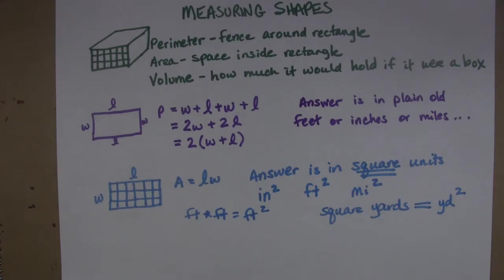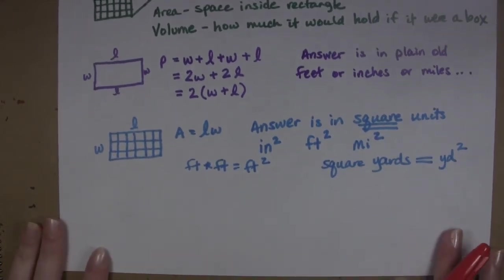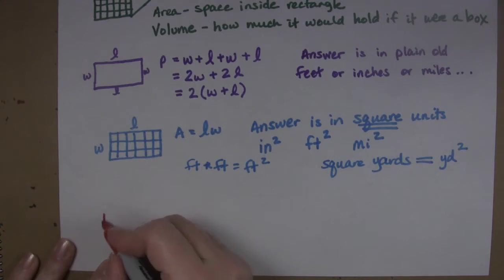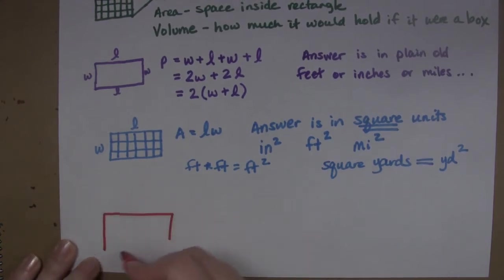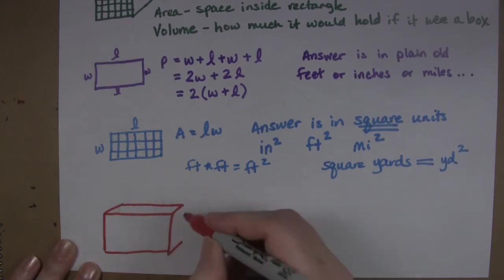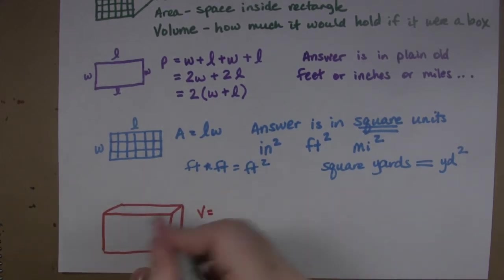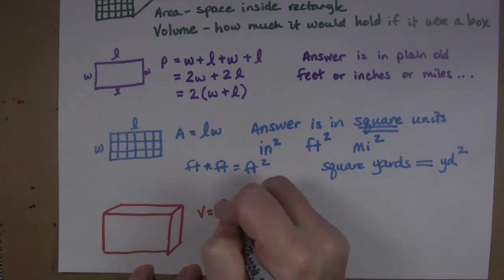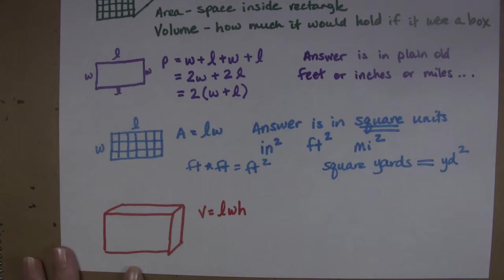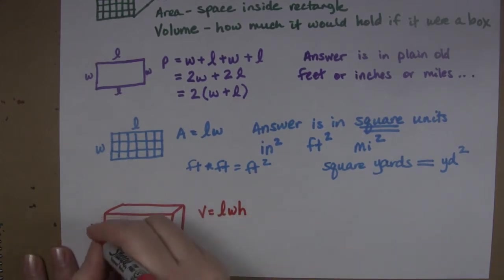Now it gets even a little more challenging when it comes to volume. So volume we have our rectangle again. And usually we kind of label things a little bit differently. We usually say that for volume it's length times width times height. So this would be our length, this would be our width, and this would be our height.